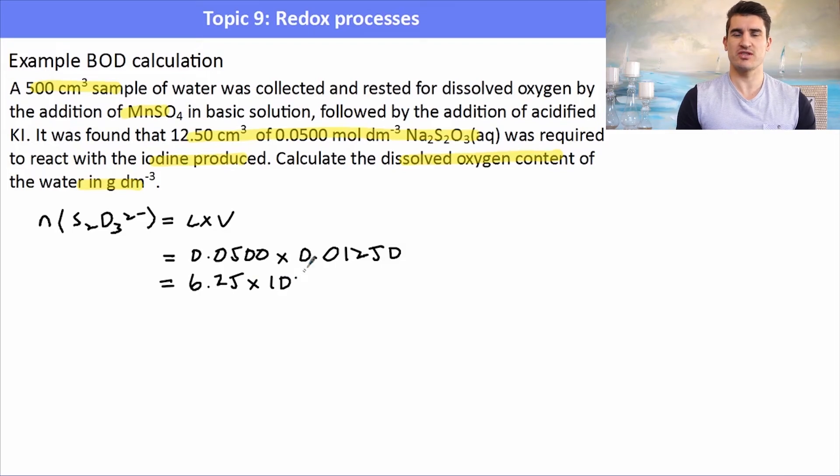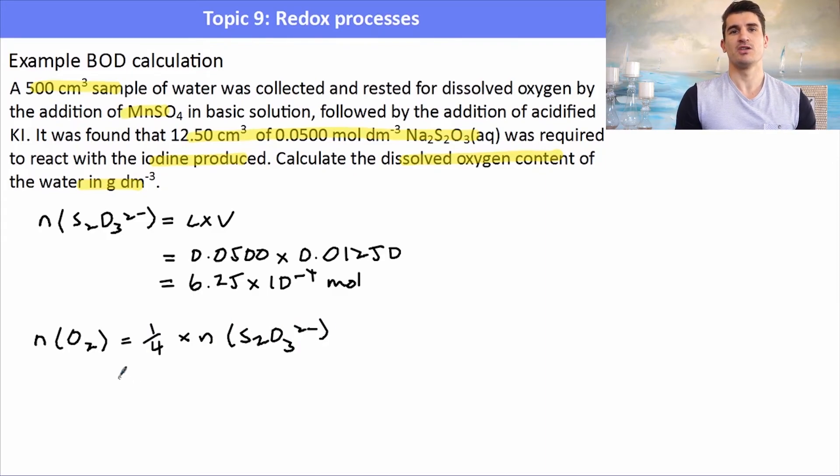Then we can simply use the relationship between thiosulfate and oxygen to work out the number of moles of oxygen. It's a 1 to 4 ratio. So the number of moles of oxygen will be a quarter of the number of moles of the thiosulfate. So to determine the number of moles of oxygen in this sample, we divide the number of moles of the thiosulfate by 4, which gives us 1.56 times 10 to the minus 4 mole.